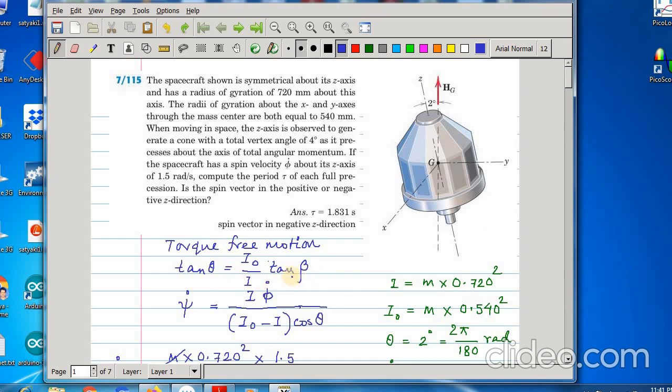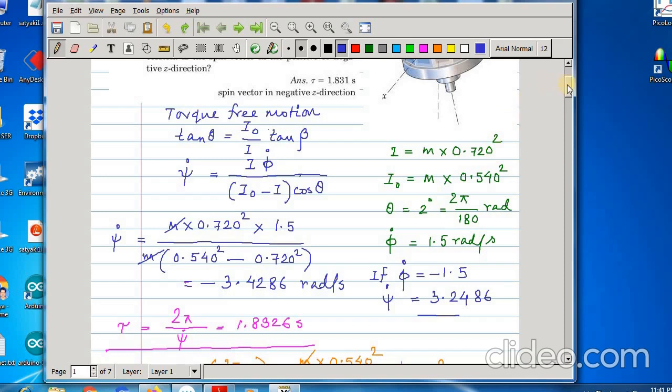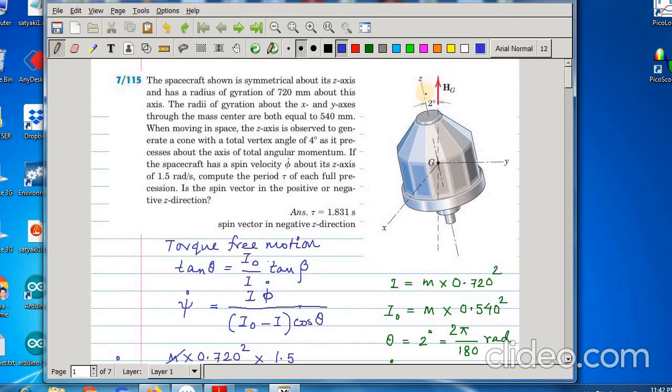Since this is the torque-free motion these are the two relations. The first relation is tan theta equal to i naught by i tan beta. What is theta? Theta is this angle between the angular velocity vector and this z axis. And what is beta? Beta is the angle between the angular velocity vector omega and this spin axis z. And psi dot the relation between psi dot and phi dot is this. So, if you use this relation you get a negative value of psi dot. A negative value of psi dot means it is not about this in the upward direction but in the downward direction. But if you take psi dot in the upward direction your phi dot has to be negative.